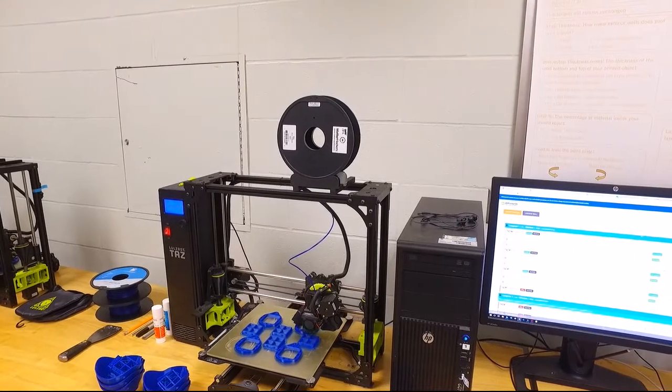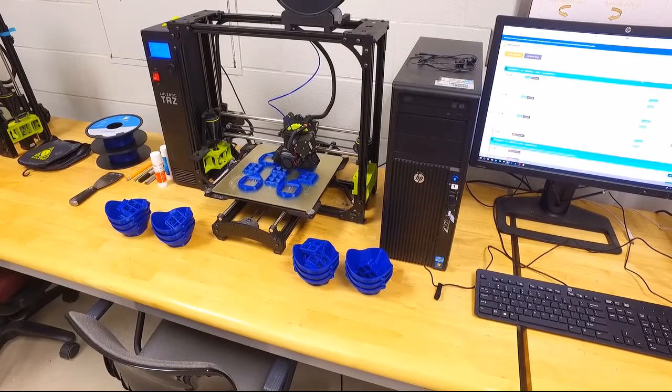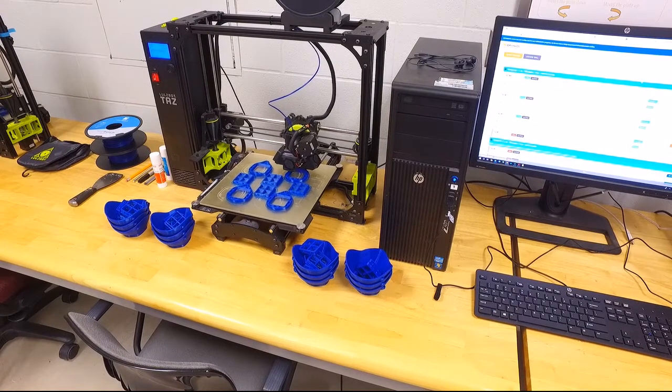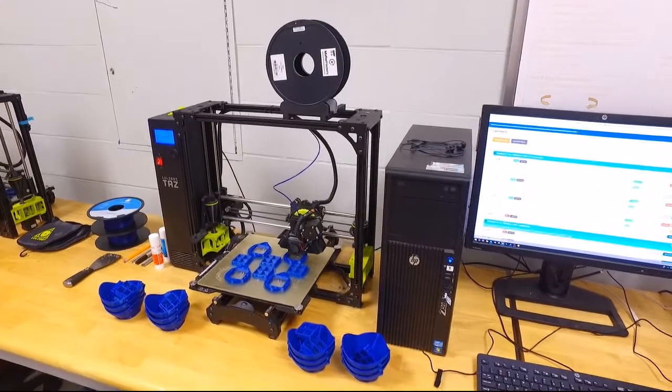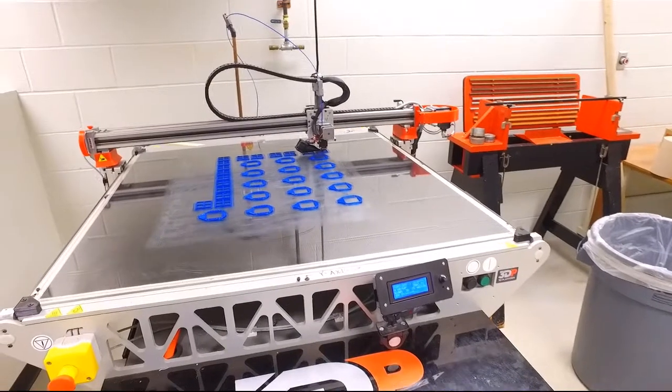What you're seeing here on the table are actually 3D printed face masks being made for distribution for a local partner, and they'll be distributed to workers in current need. We're actually using both small and large-scale printers at the moment to print out those masks. So this is our larger printer here.